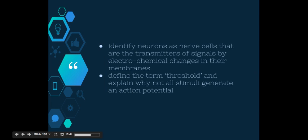Okay, so this video is going to be looking at two dot points. First, identify neurons as nerve cells that are transmitters of signals by electrochemical changes in their membranes. And secondly, define the term threshold and explain why not all stimuli generate an action potential.